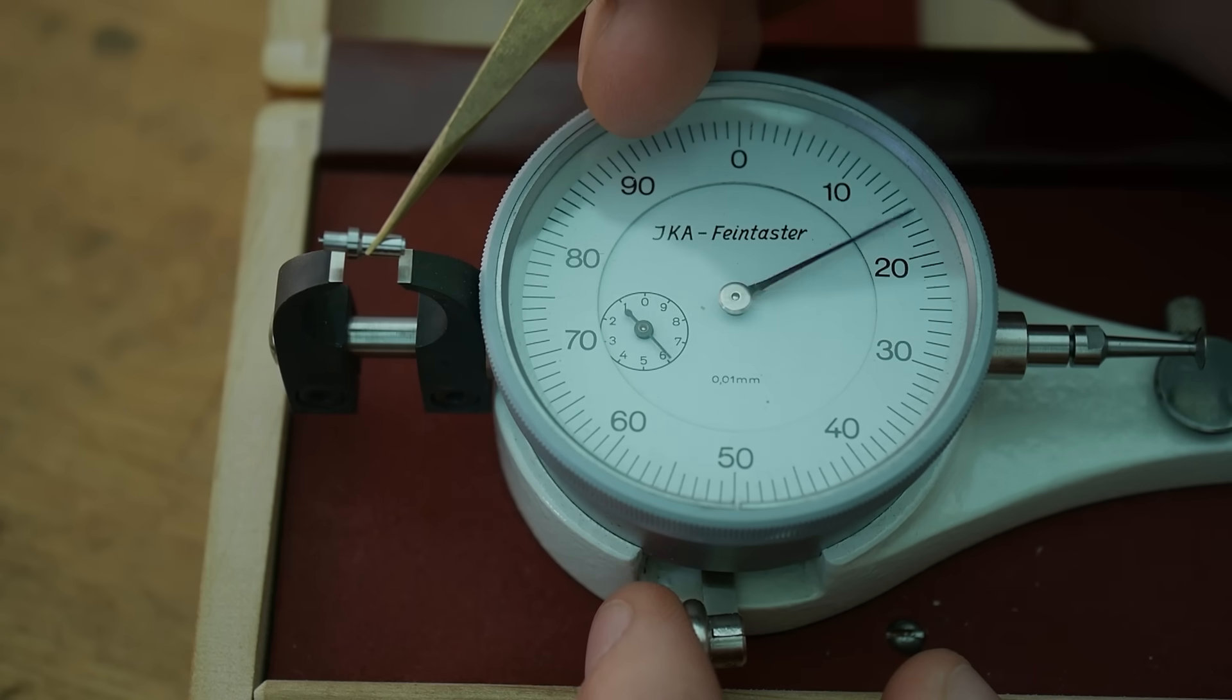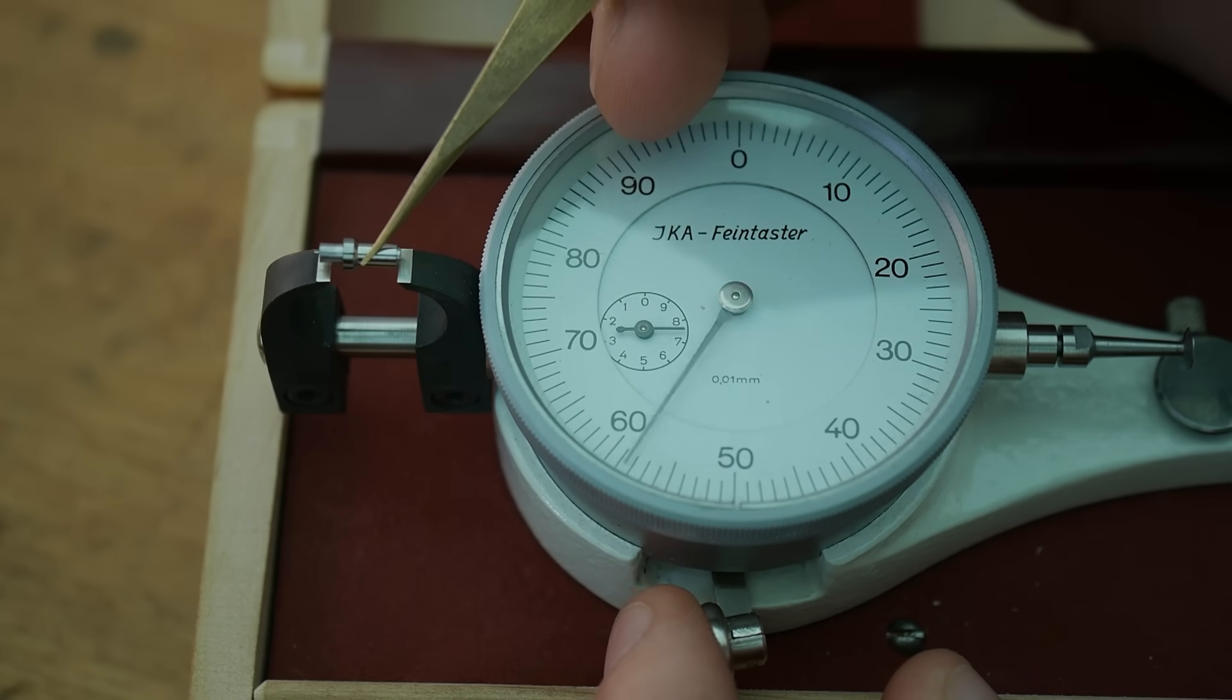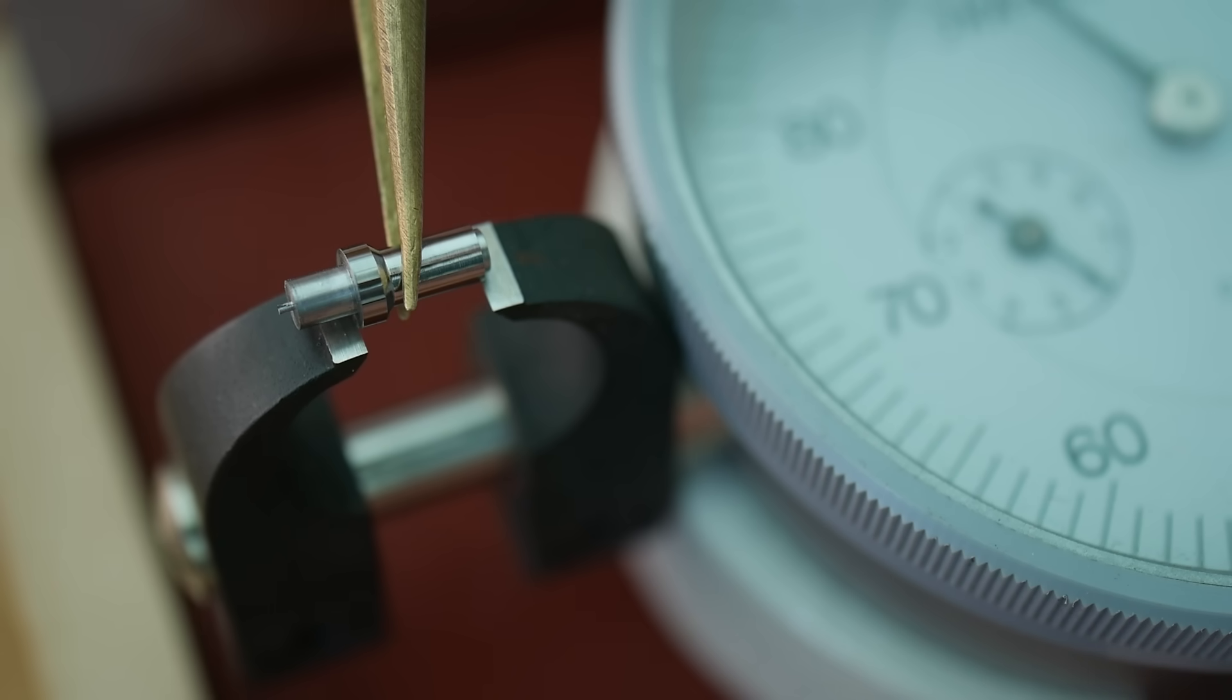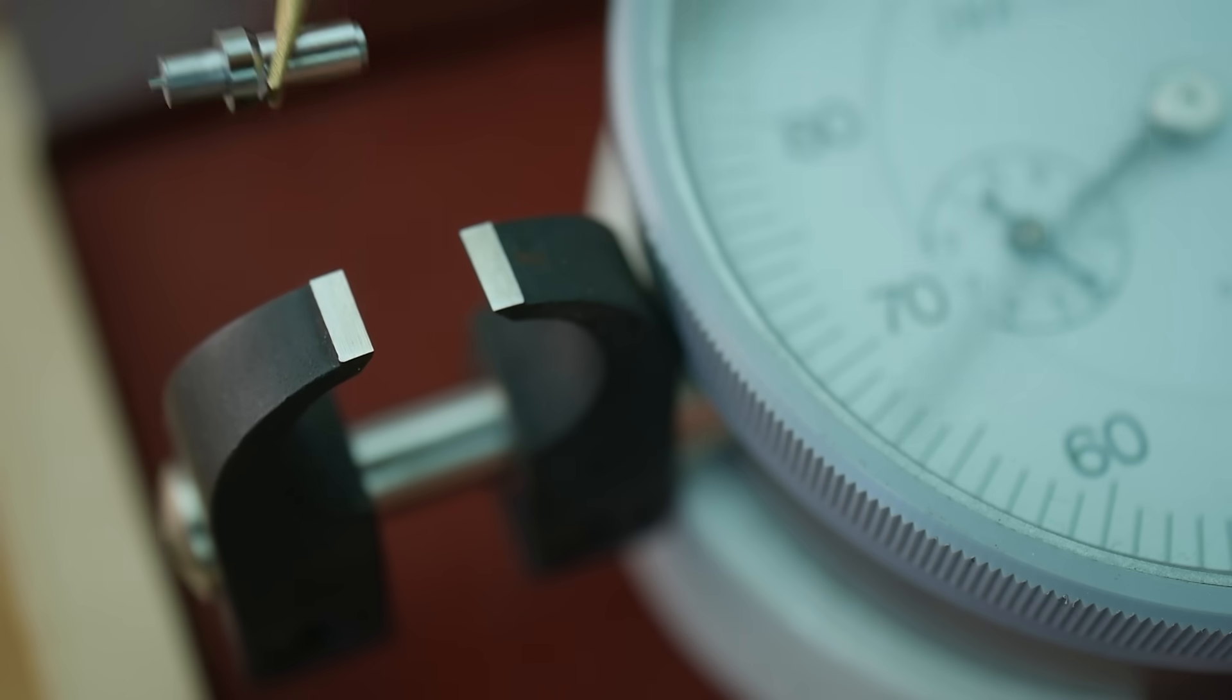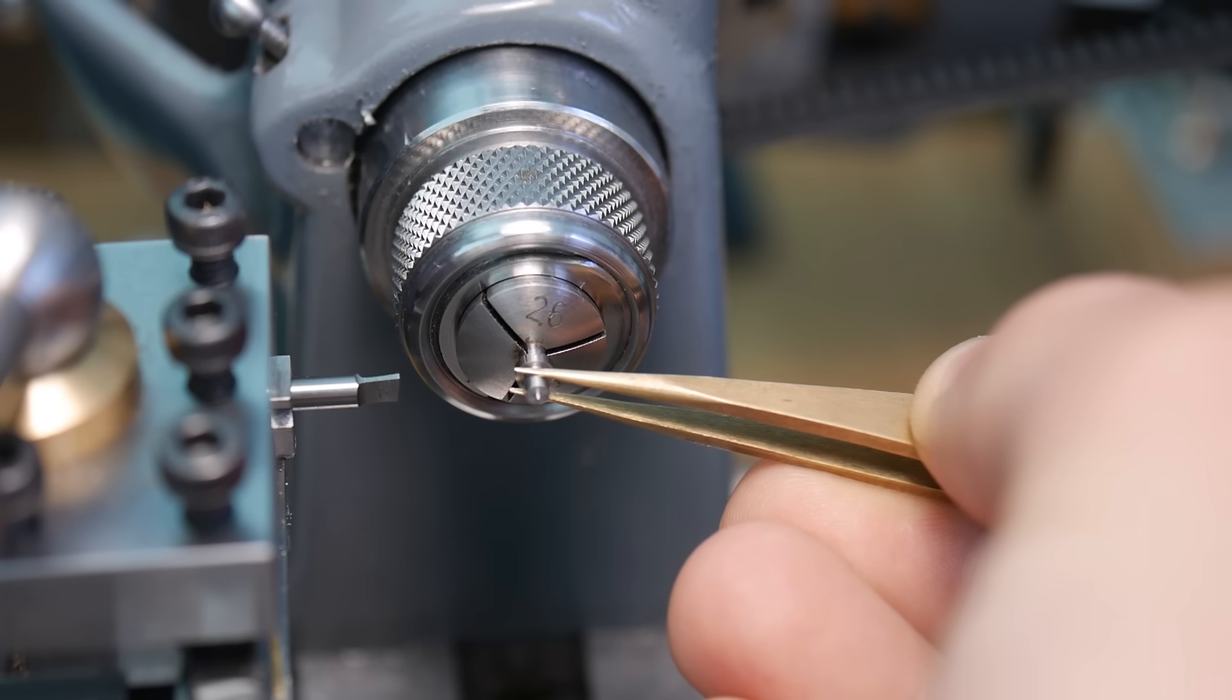One of the key dimensions is the pillar length. I'm targeting 5.8mm, and you can see from this measurement that I still have 0.115 to remove.